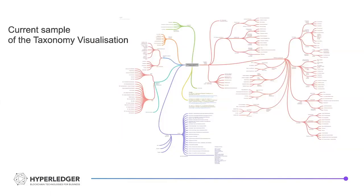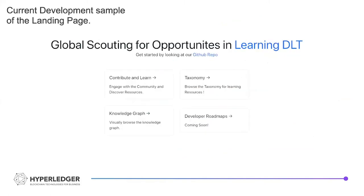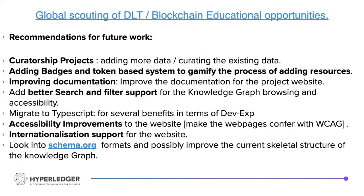This is a taxonomy visualization sample — it's very large and not really readable, so I'll skip past it. This is the front page for the website, also a development sample. I have not deployed the website yet, and I'll get to why shortly.